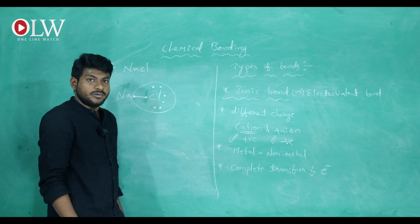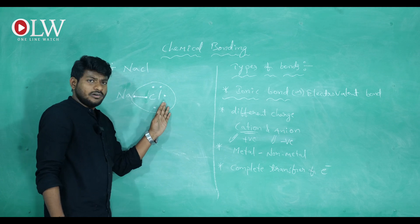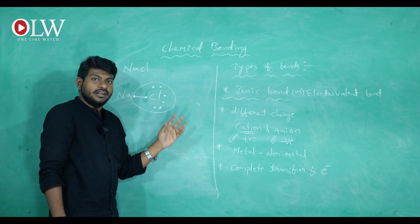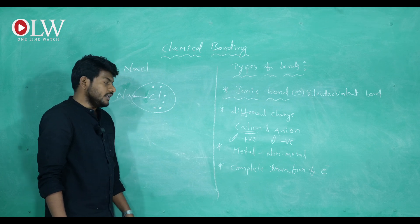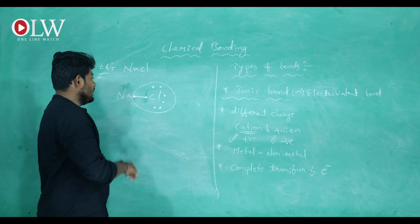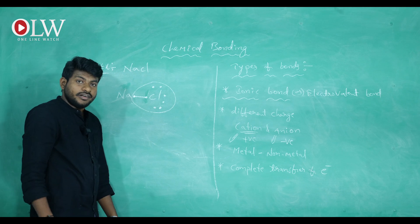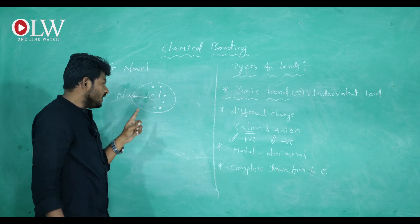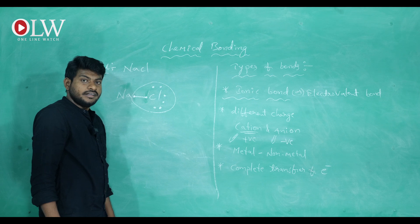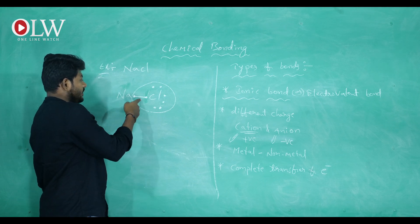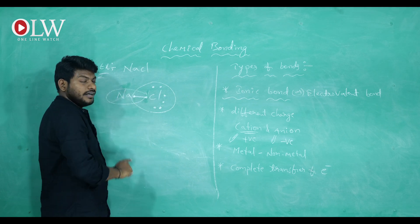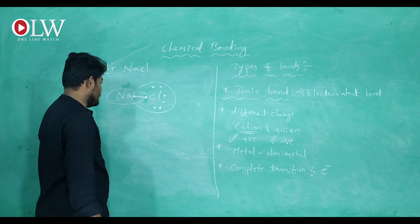Chlorine now contains eight electrons in its outermost shell and is following the octet rule. But what about sodium? How is sodium following the octet rule? It only had two electrons remaining — how can we say it has eight electrons? Let's see the electron configuration of sodium.